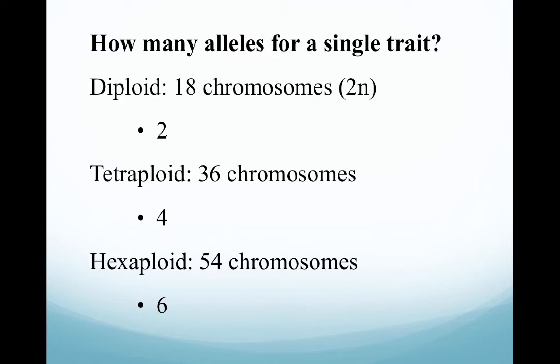If we're looking at how many alleles we have for a single trait — keeping in mind an allele is an alternative form of a gene — a diploid individual with 18 chromosomes has two alleles for a single trait. A tetraploid organism with 36 chromosomes has four alleles, because there are four copies of the genetic material. A hexaploid has six copies of genetic material, therefore six alleles for a single trait.